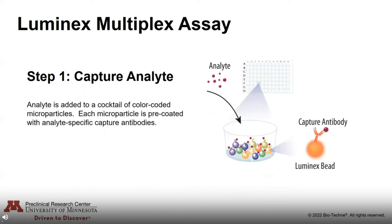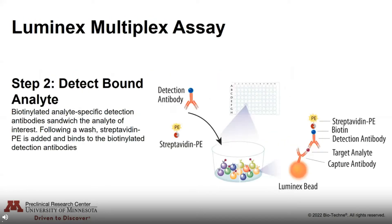The first step is to co-incubate your sample with your bead cocktail, where your sample binds with the capture analytes. Next, you co-incubate your bound sample with a detection antibody — in this case a biotinylated analyte-specific detection antibody — which will sandwich with the analyte of interest. Following a wash, you add streptavidin-PE, which binds to the biotinylated antibody and allows for detection.